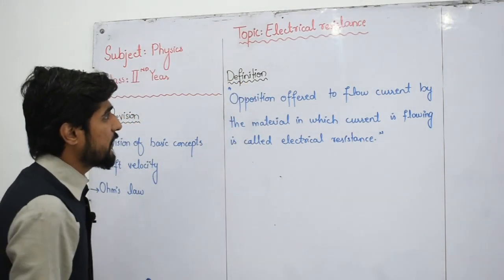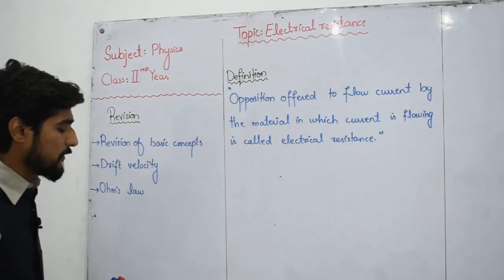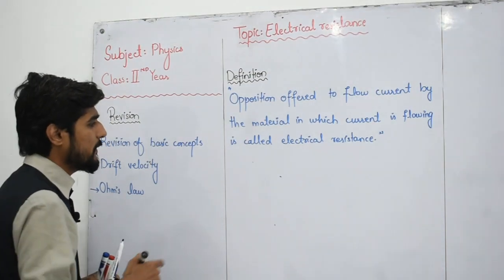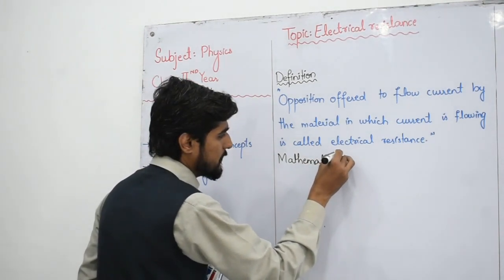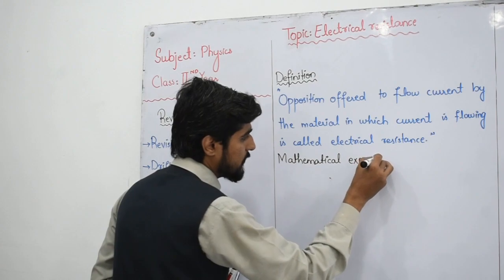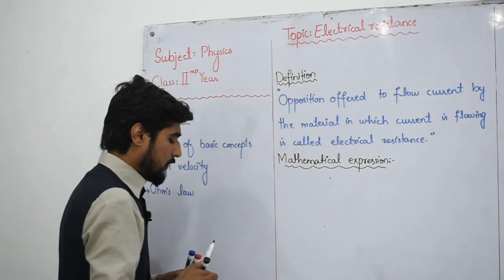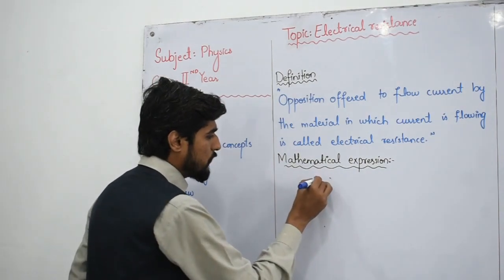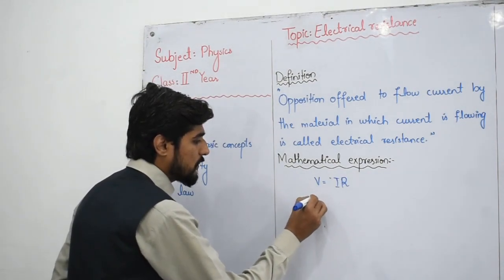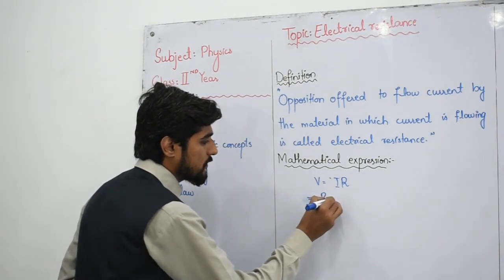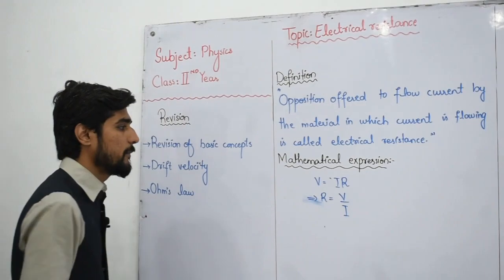So I have defined electrical resistance as the opposition offered to the flow of current by the material in which the current is flowing. Now in terms of mathematics, the mathematical expression for electrical resistance: according to Ohm's law you know that V is equal to current times resistance. From this, resistance R will be equal to voltage divided by current — R equals V divided by I.